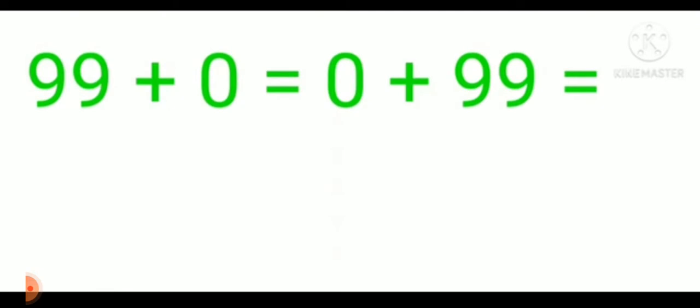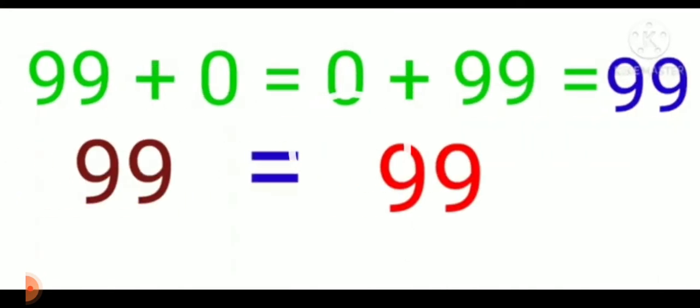99 plus 0 equals 99, and 0 plus 99 is always 99. So here you can see if we are changing the order of the numbers, the sum of that particular number will not change. 99 plus 0 equals 99, or 0 plus 99 also equals 99.